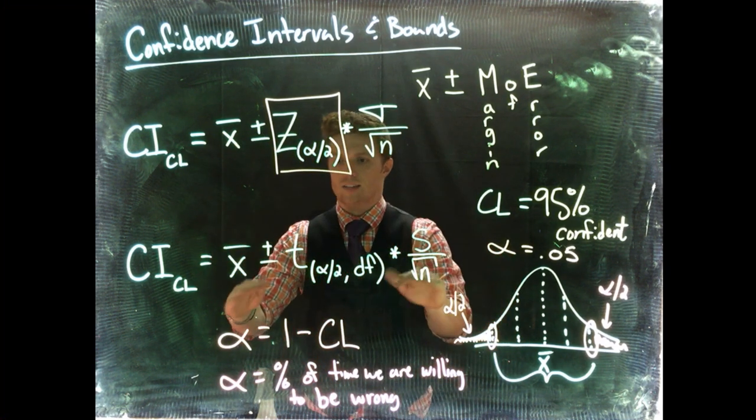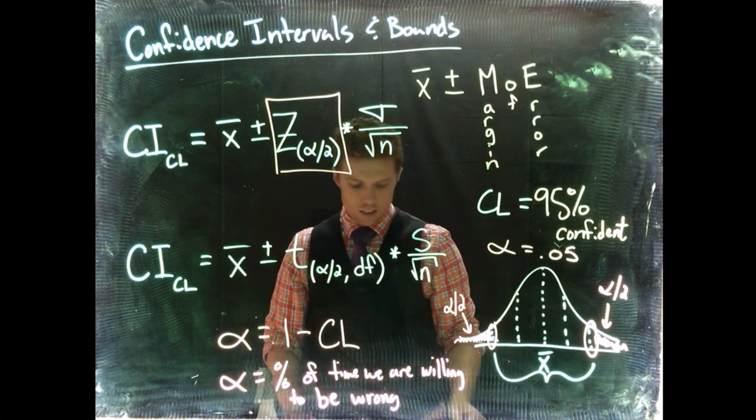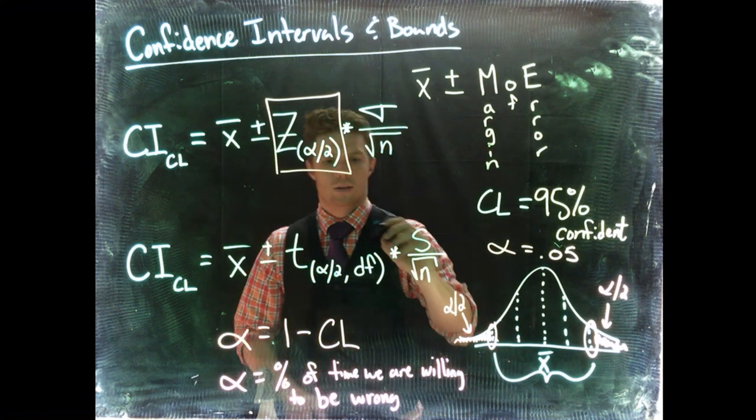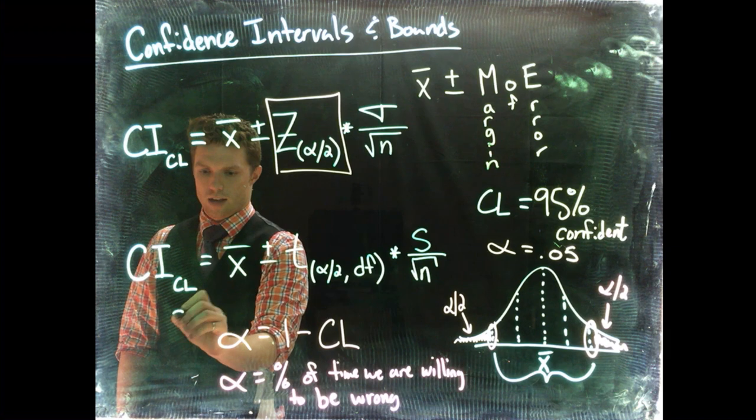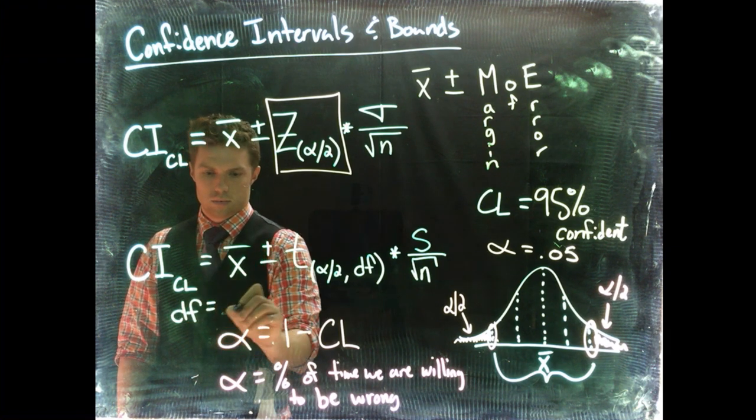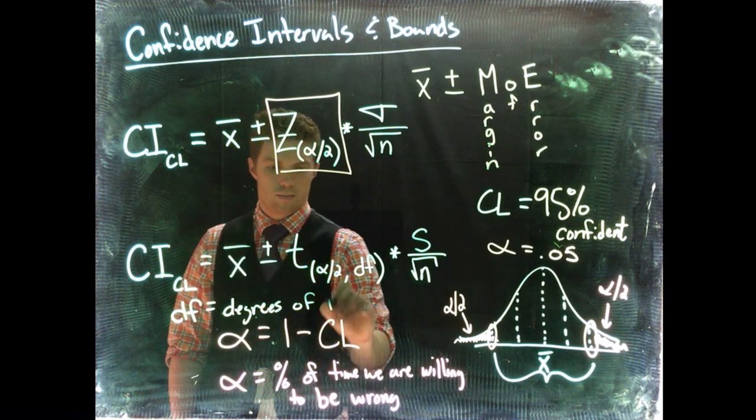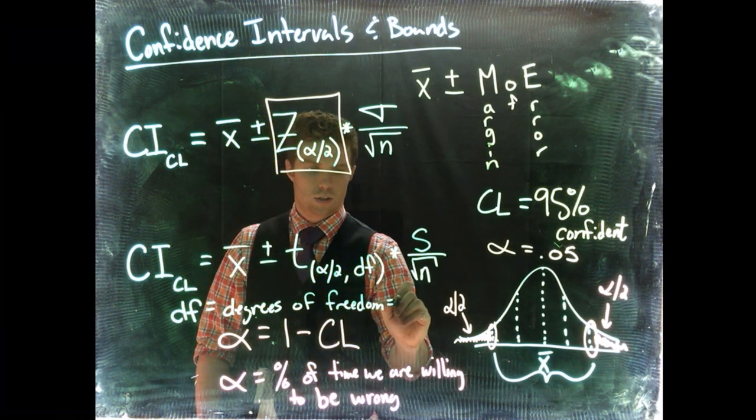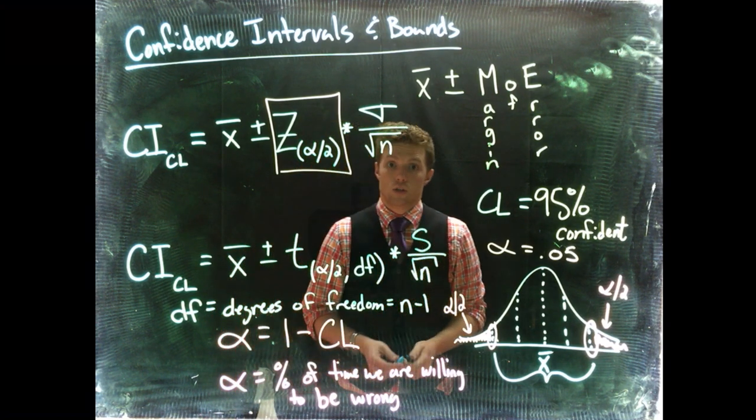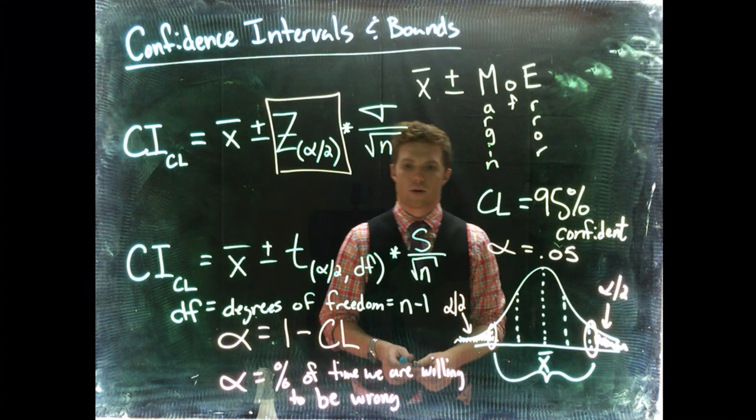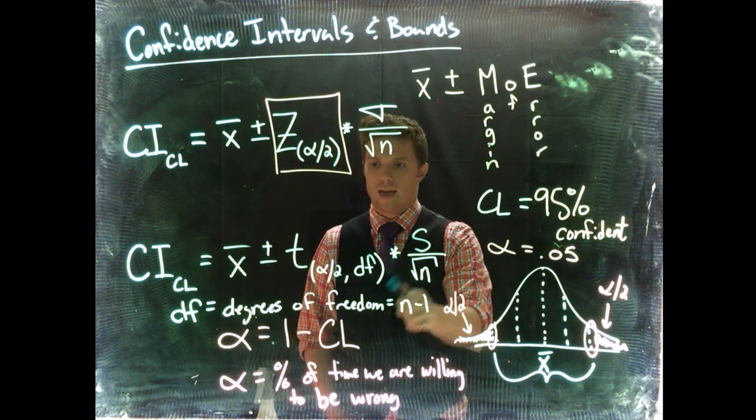And it's exactly the same down here. The only difference is, is now we have a t-distribution. And with a t-distribution, we have to take into account the degrees of freedom. I am running out of room, but I've got enough room right here. So we've got degrees of freedom, which is equal to n minus 1. Since we're using a sample standard deviation, just to adjust it correctly, we have to take our degrees of freedom as n minus 1.